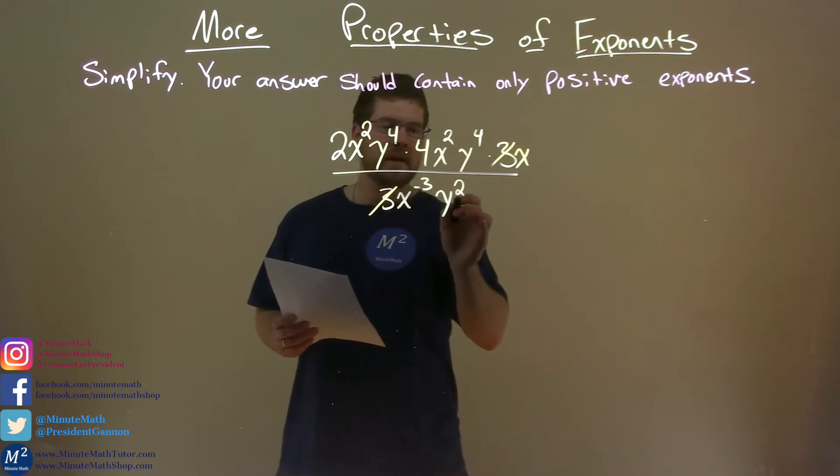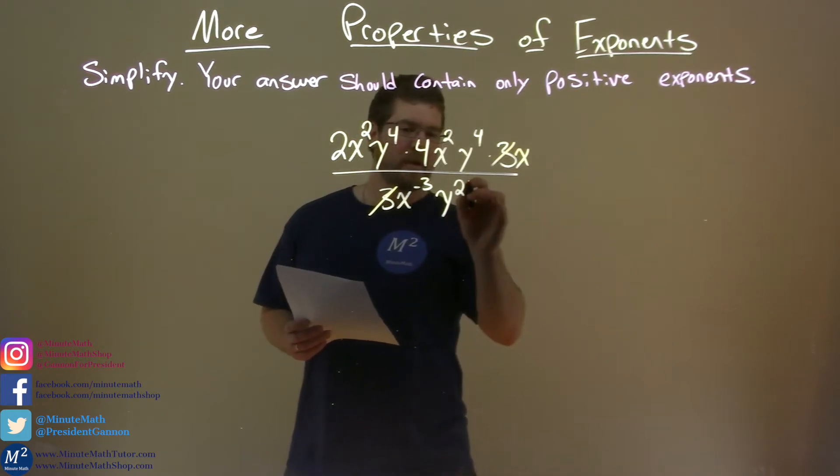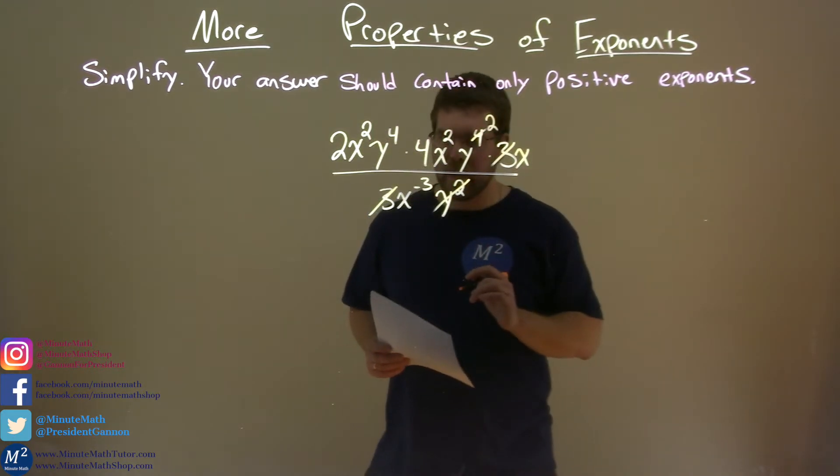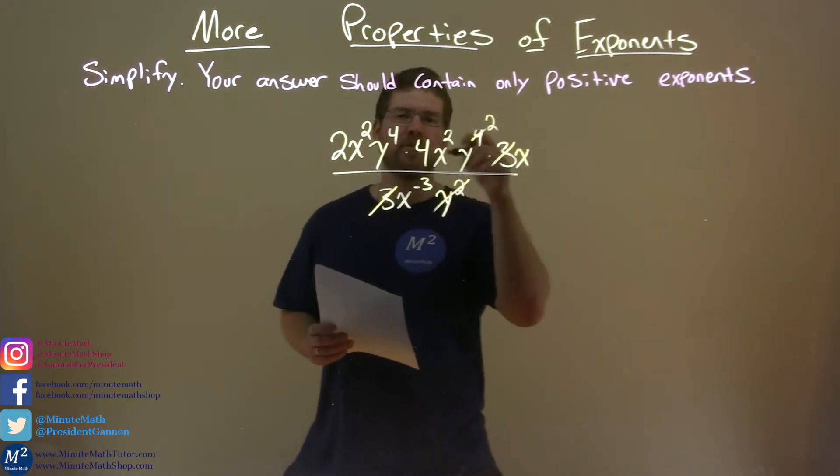We have a y squared here and we have a y to the fourth up there. So y squared down here goes away, this fourth power becomes a second power, right? We subtract: 4 minus 2 is 2.